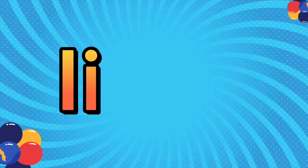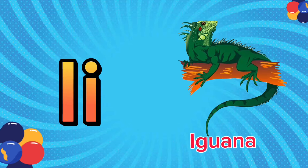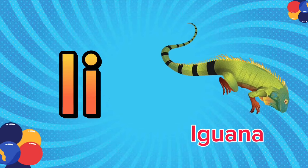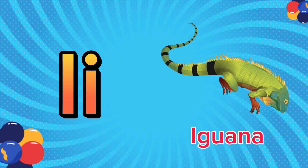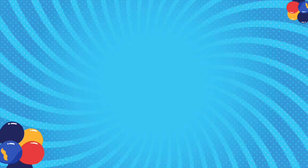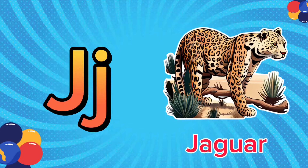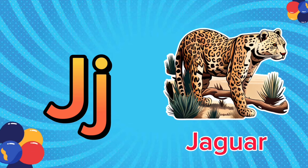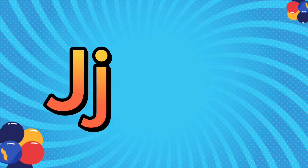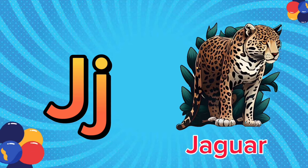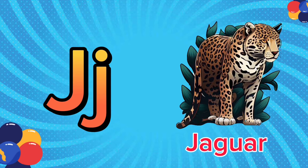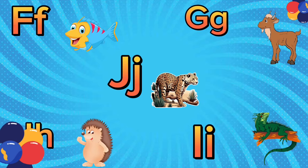I is for iguana. I, I. Iguana. I is for iguana. I, I. J is for jaguar. J, J. Jaguar. J is for jaguar. J, J.